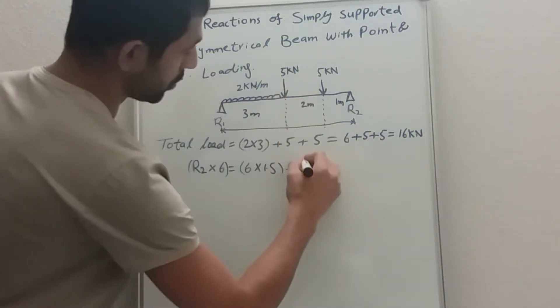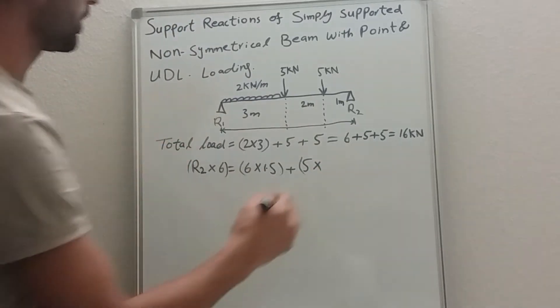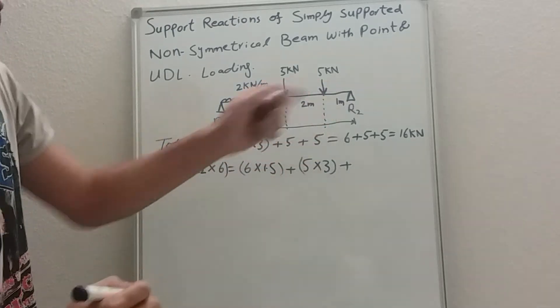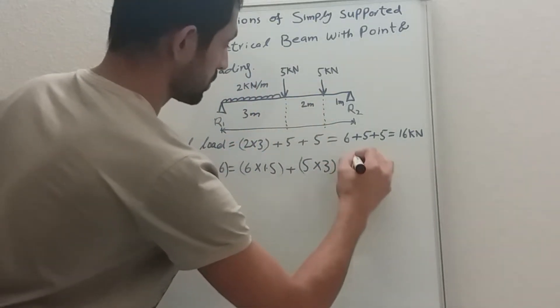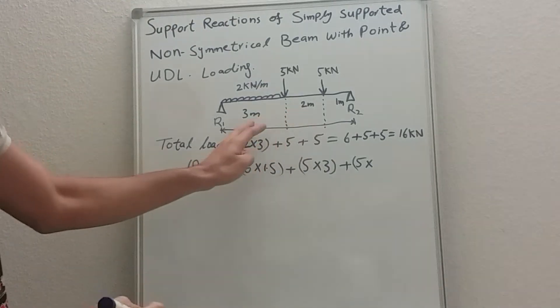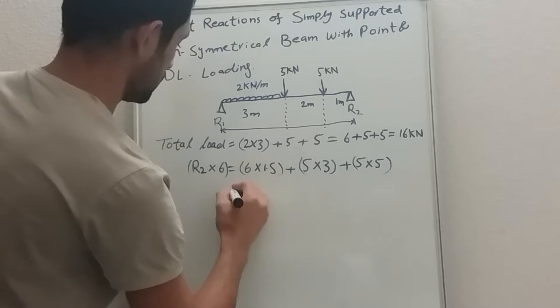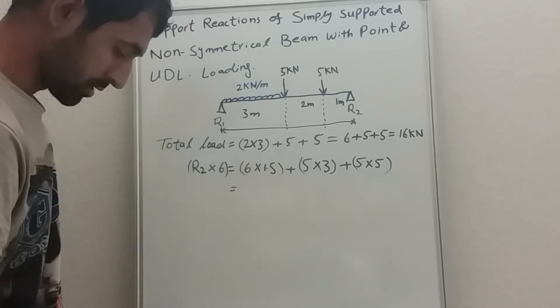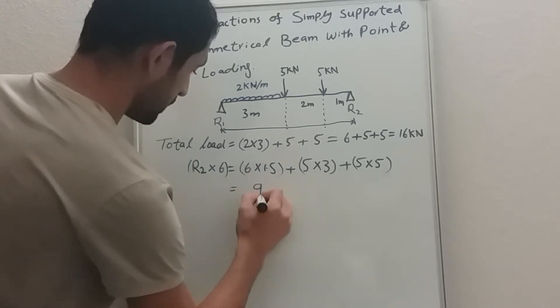Plus now we have point load times by three, plus we have another point load which is five kilonewtons times by the arm, three plus two, which is five.